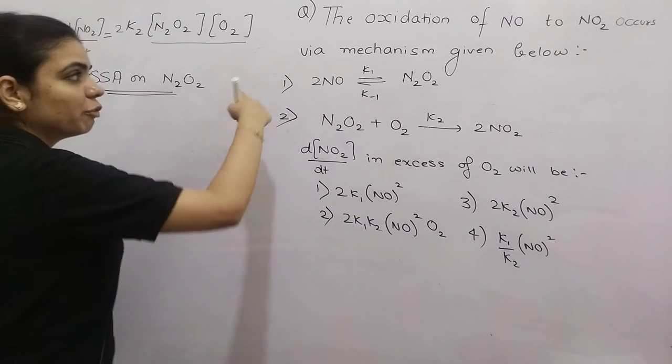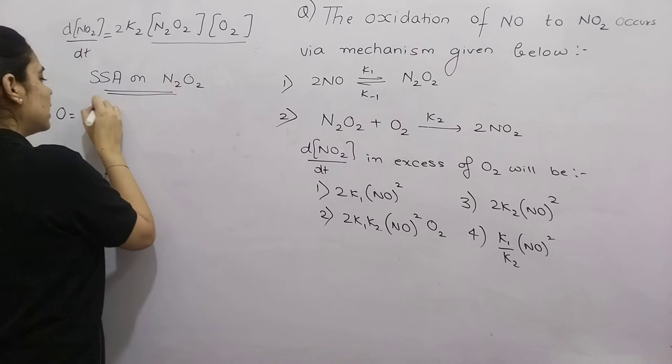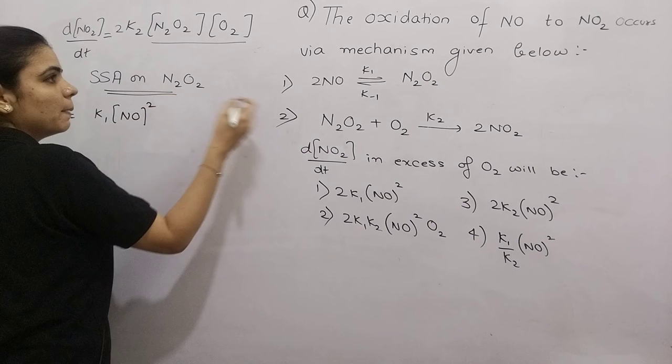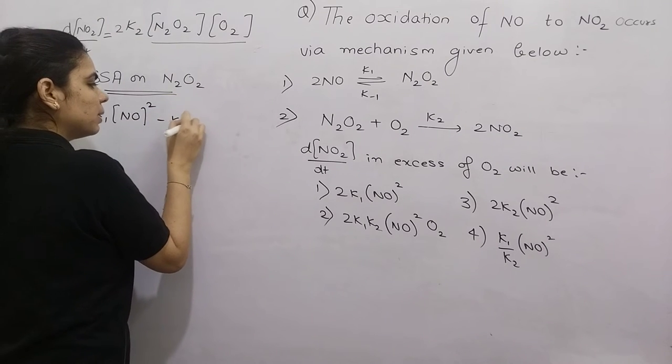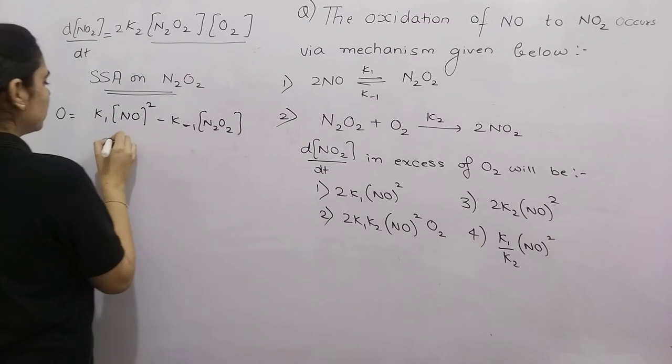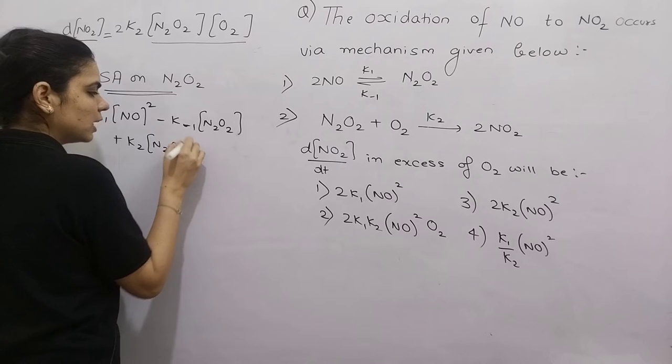So where does N2O2 change? Look, in the forward reaction if I write, that will be K1[NO]^2. In backward, K-1[N2O2]. You always write reactants with the rate constant. And in the third reaction, K2[N2O2] with O2.